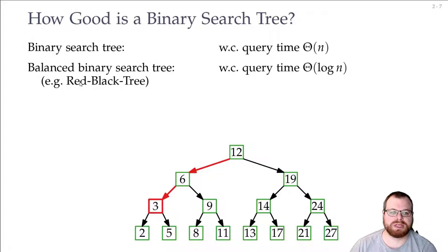So for these red-black trees, for example, or AVL trees or whatever you like, the worst case query time is theta of log n.